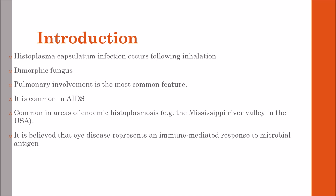Pulmonary involvement is the most common feature, and it is common in AIDS. Presumed ocular histoplasmosis syndrome is relatively common in areas of endemic histoplasmosis — for example, the Mississippi River Valley in the USA. Causality has never been definitively confirmed, but over 90% react positively to histoplasmin skin testing. It is believed that eye disease represents an immune-mediated response to microbial antigen rather than direct damage due to active infection.